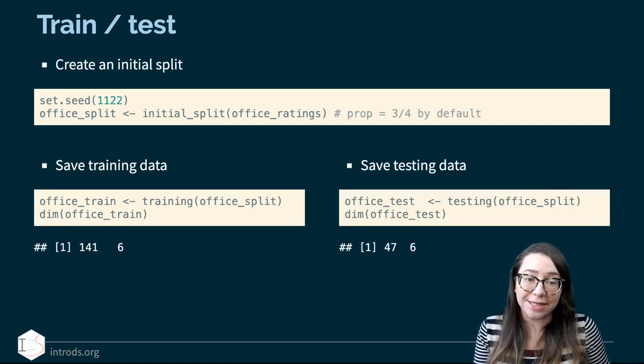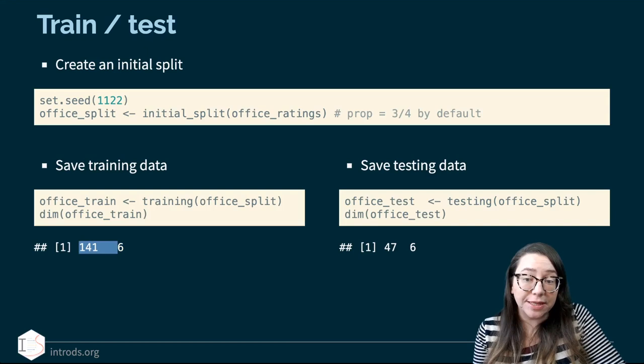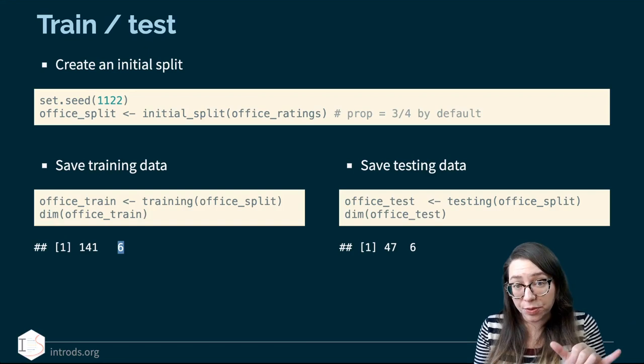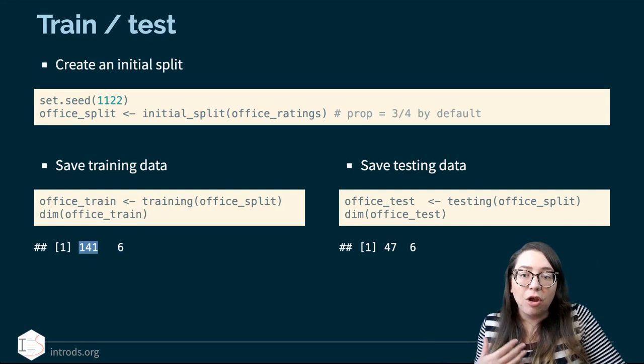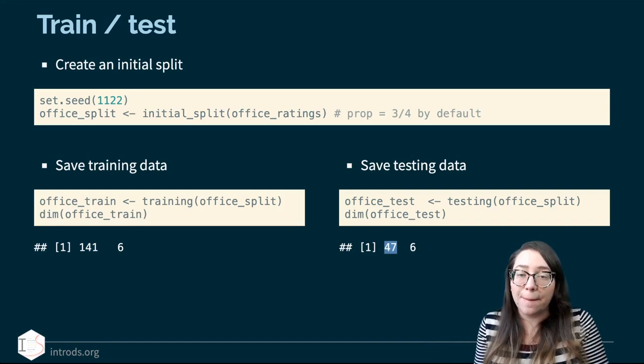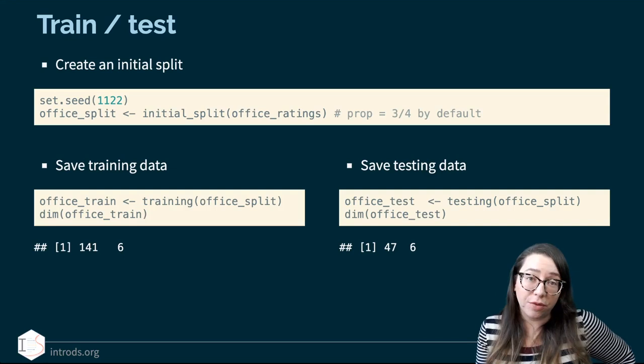The number of columns are the same between your training and testing data, and also the same as your original data set. The number of rows is higher for training than for testing, and the sum of these two numbers makes 188 — our original sample size. So we have our partitions, and we're really going to put our testing data in our pocket and not touch it until we're ready with a model that we've trained on the training data.